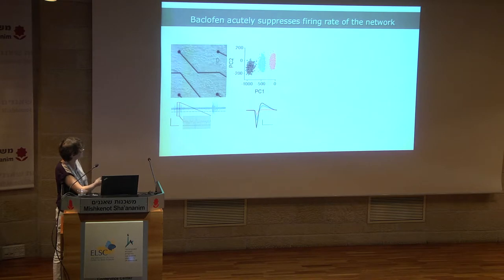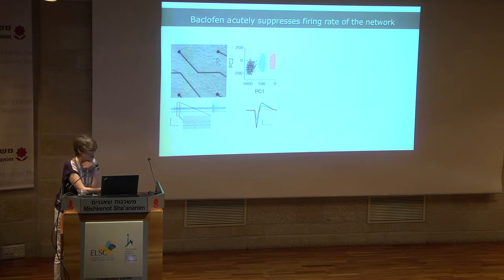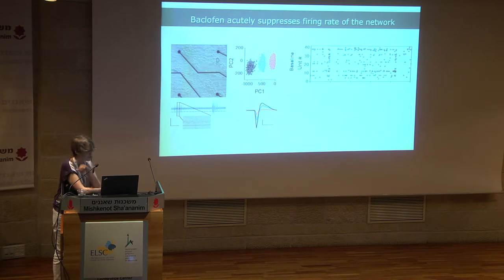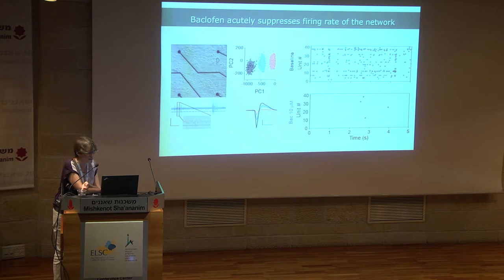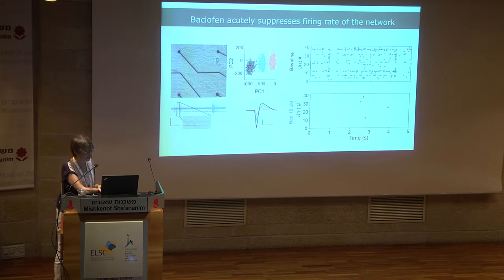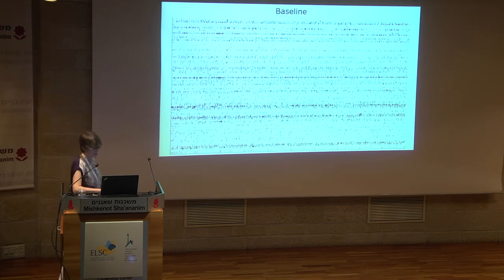We combined this with spike recording using multiple electrode arrays. We could record multi-unit spikes and use principal component analysis to isolate single units at each electrode. When we add 10 micromolar baclofen you can see complete inhibition in the network — the immediate effect is almost total suppression of spiking. The question we ask is how the system reacts when baclofen is chronically perfused.